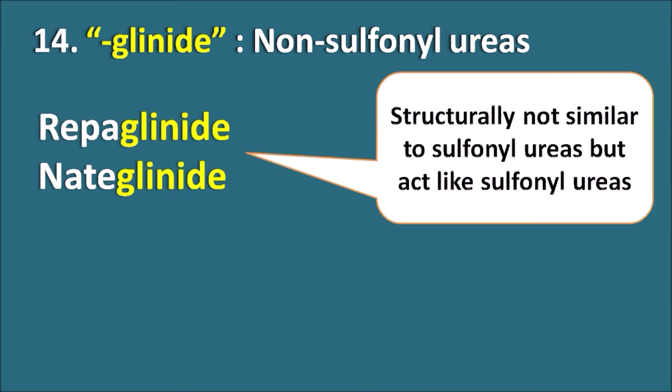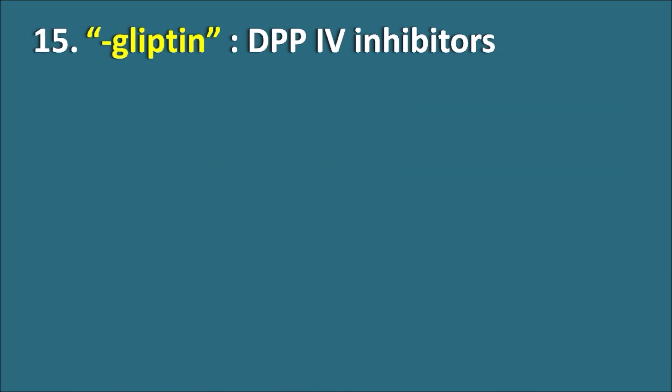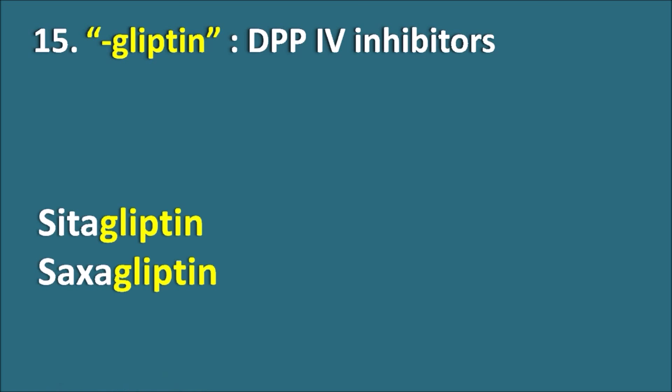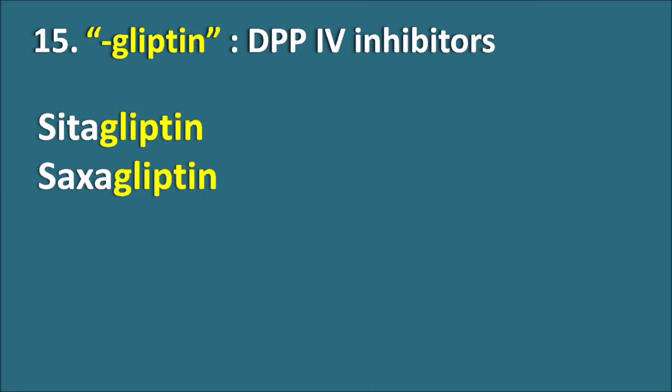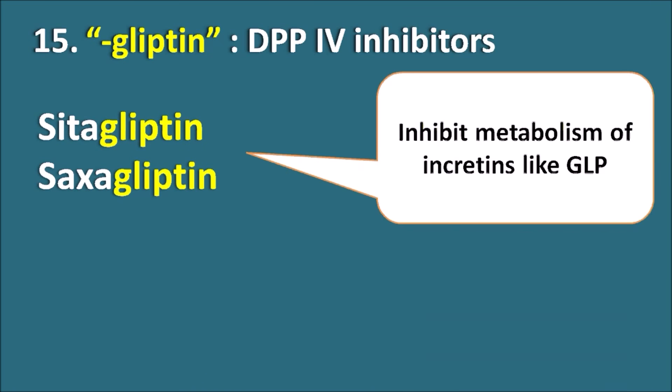Fifteenth, the suffix '-gliptin' indicates DPP-4 inhibitors — dipeptidyl peptidase-4 inhibitors. Drugs like Sitagliptin and Saxagliptin are DPP-4 inhibitors. These drugs inhibit the metabolism of incretins like glucagon-like peptide, thereby increasing their levels and resulting in increased insulin release.